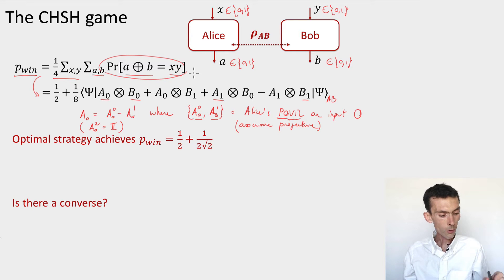In that case, it means that A_{0,0} and A_{0,1} are two orthogonal projections. When I take their difference, I get a Hermitian matrix whose eigenvalues are just plus one and minus one. In particular, we'll have the condition that A0 squared is the identity. What you also saw is that the maximum probability of winning in the CHSH game is equal to a half plus one by two over root two, approximately equal to 0.85.